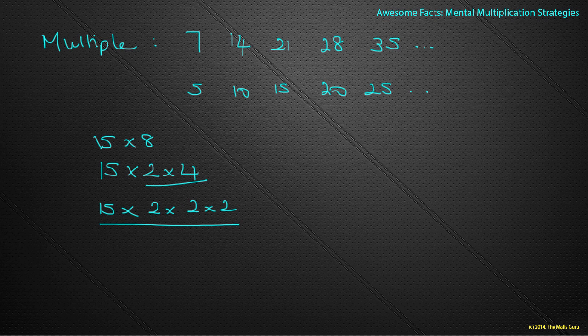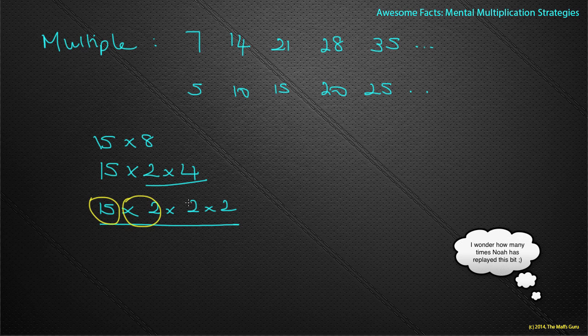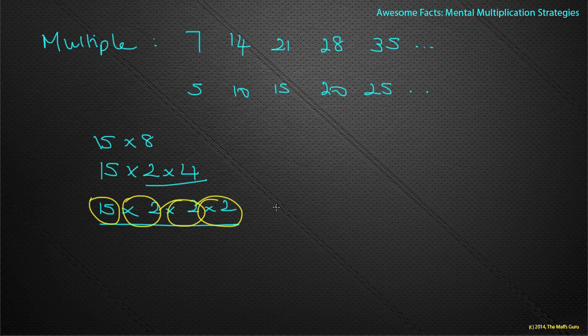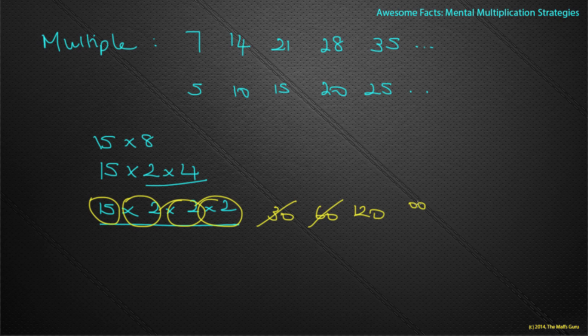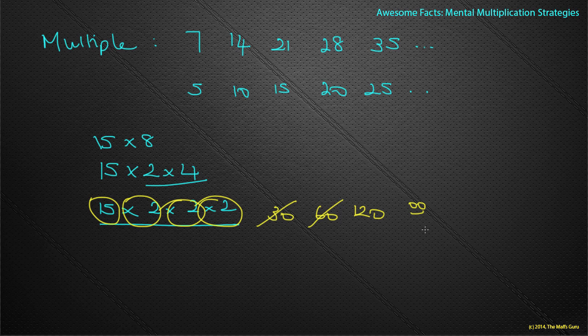Or, as I want to say one more time, what I do is I take the 15, I double it, I double it, I double it again. So 15 doubled is 30. Double it again gives me 60. Double it again gives me 120. And there we go. How cool is that? Multiplying by 8, I double it, double it, and double it again.